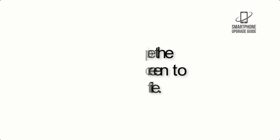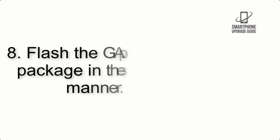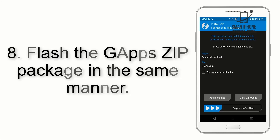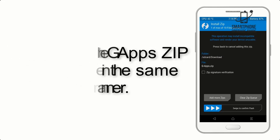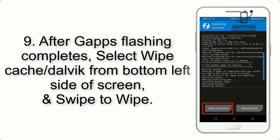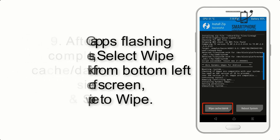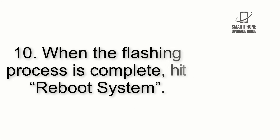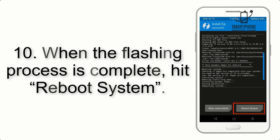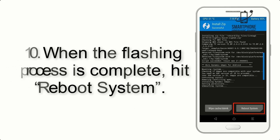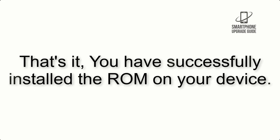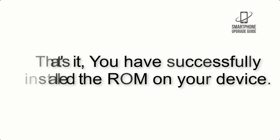Step 8: Flash the GApps zip package in the same manner. Step 9: After GApps flashing completes, select Wipe Cache and Dalvik from the bottom left side of the screen and swipe to wipe. Step 10: When the flashing process is complete, hit Reboot System. That's it — you have successfully installed the ROM on your device.